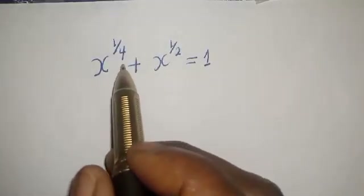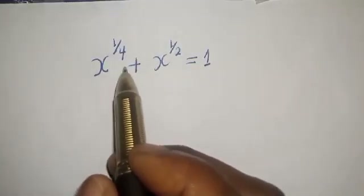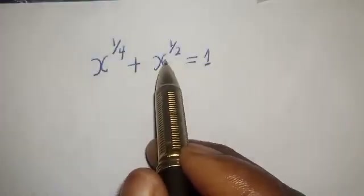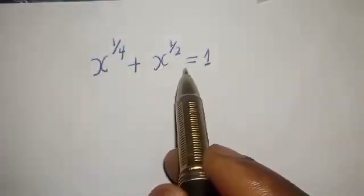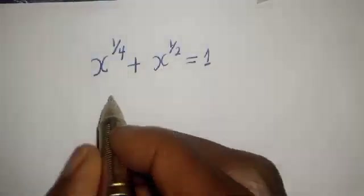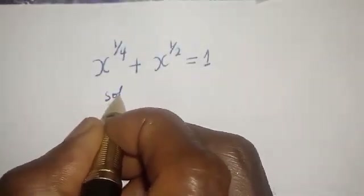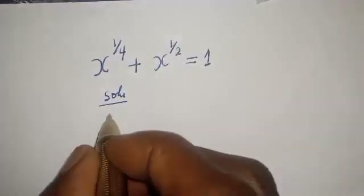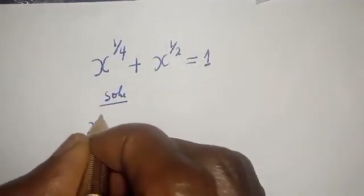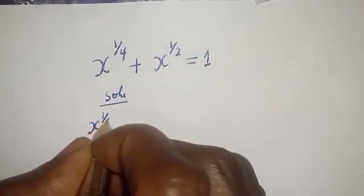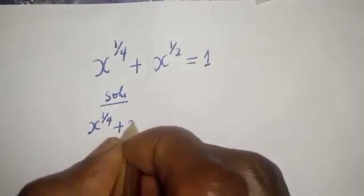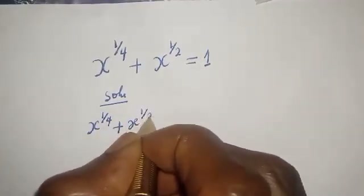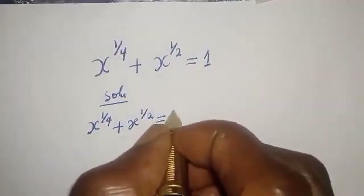Hello, how to solve for x from this given equation: x raised to the power 1 over 4 plus x raised to the power 1 over 2 is equal to 1. Solution.